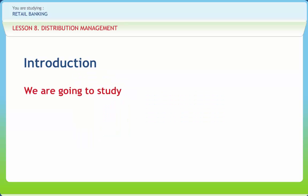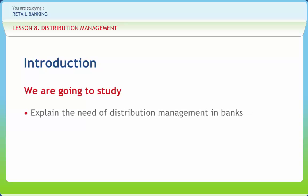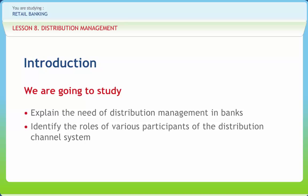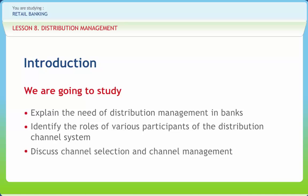We all know the function of optimizing the distribution networks to achieve the effective and efficient flow of personnel, equipment and material to meet the combatant commander's requirements. Financial institutions and non-traditional players are looking for opportunities to invade this space or to redefine it through disruptive innovation. In this lesson, we will explain the need of distribution management in banks, identify the roles of various participants of the distribution channel system, and discuss channel selection and channel management.